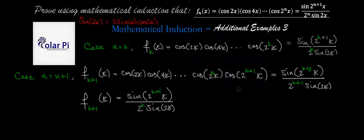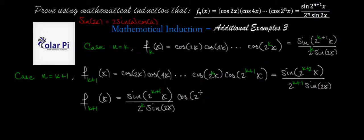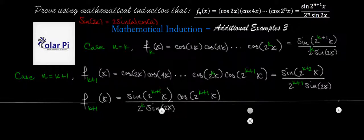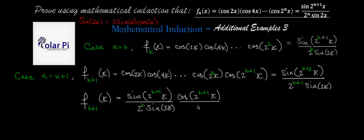This quotient by the inductive step is the product of the first k terms. And so all we have left to do is multiply this by the very last term, cosine of 2 to the k plus 1 times x, and show that the result equals what we want. The denominator on that last cosine is just 1.